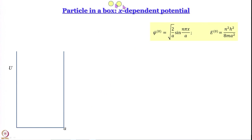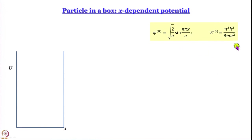For the particle in a box with a slanting bottom — which means an x-dependent potential — the unperturbed system is our standard particle in a box where V = 0 for all x within 0 and a, and infinity outside. For this system the wave function is √(2/a) · sin(nπx/a) and the energy is n²h²/(8ma²).